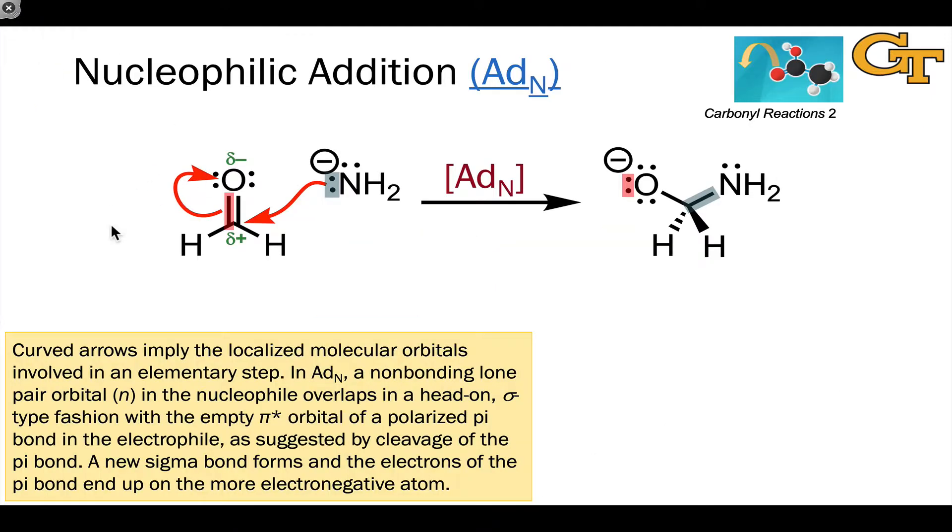Really quickly, let's review these two elementary steps that are key to the nucleophilic acyl substitution process. The first step is nucleophilic addition to a polarized pi bond. The electron flow you can see here is exactly analogous to what we just saw. Here we're using an aldehyde, so beta elimination isn't possible.